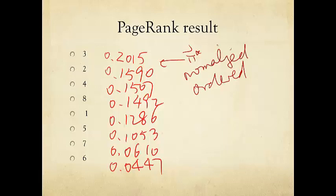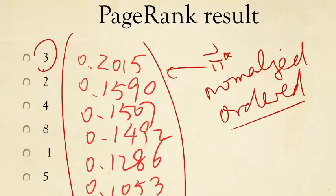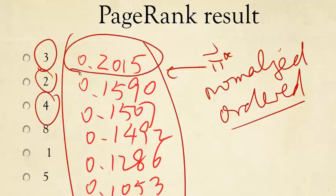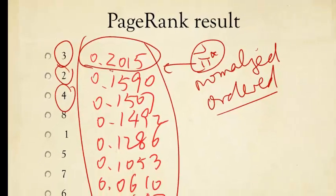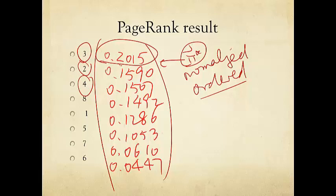So what you see here is the normalized and ordered by the importance scores in descending order. So node 3 has the highest importance score and therefore ranked number 1, followed by node 2, followed by node 4. You can see node 3 actually is by far the most important. 0.2 sounds like a small number, but remember the pi is now normalized, so it all adds up to 1. So 0.2 out of eight nodes is actually quite impressive. 2 and 4 are about the same. And nodes 6 and 7 are by far the smallest.